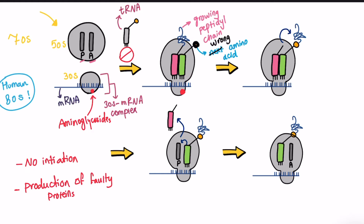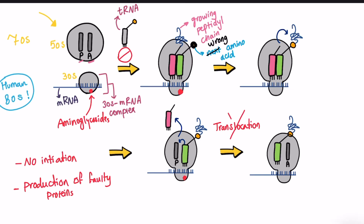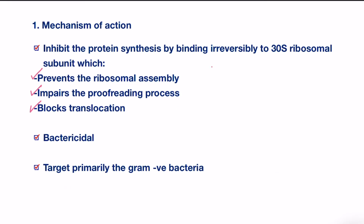Lastly, one of their believed actions is that they block translocation. This mechanism is responsible for allowing the movement of mRNA across the ribosome so new codons can be read. Once it is inhibited, translation will be arrested and may result in a premature protein. In short, these drugs work as protein synthesis inhibitors by binding to the 30S subunit, but we just covered the detailed explanation.